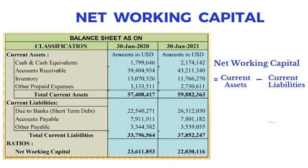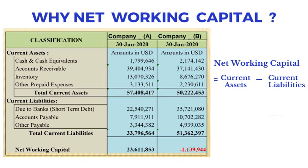The net working capital formula is often used by investors to judge a company's financial health and future prospects — whether the firm is liquid enough to pay off its short-term liabilities. In the first scenario, Company A has US$57,408,417 worth of current assets and US$33,796,564 worth of current liabilities.